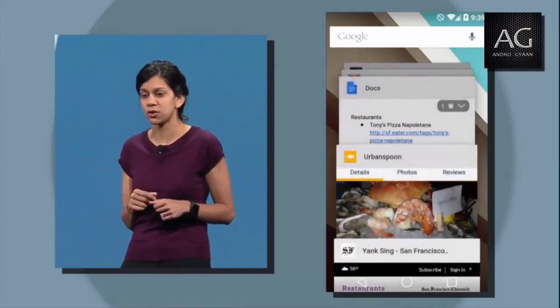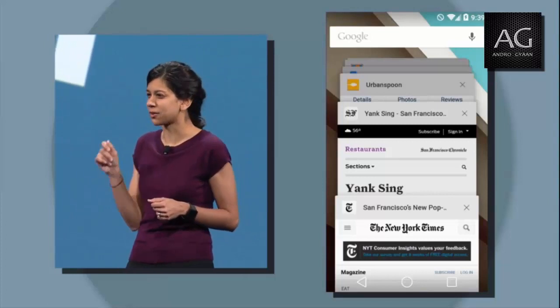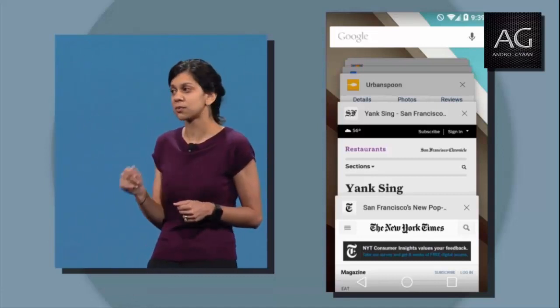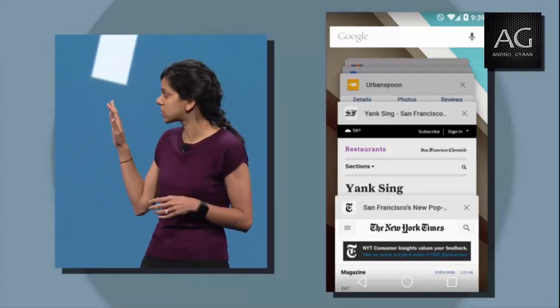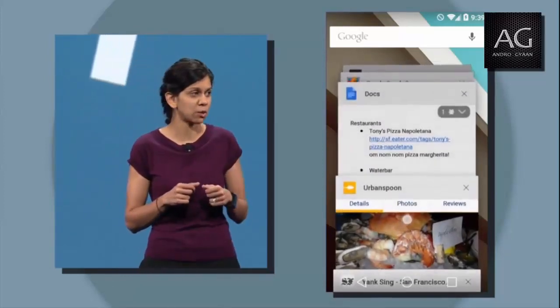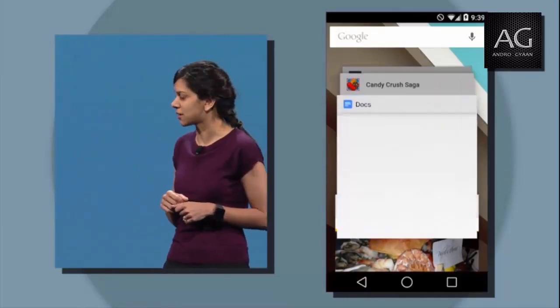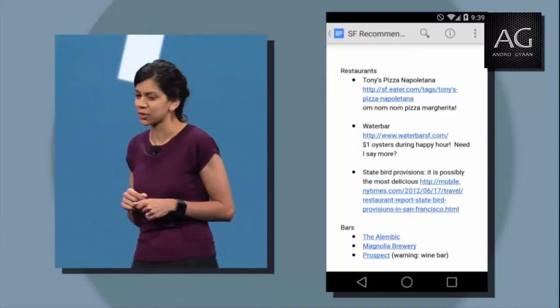As Tom scrolls through, the first thing you'll notice is Recents has also been grounded in material design — the overlapping cards have been rendered with realistic shadows and perspective. Tom's Chrome tabs are also listed here as well. He's been researching restaurants to go in SF, so he has articles from the New York Times and the SF Chronicle. As he scrolls back further, you'll notice he's been researching in the Urban Spoon app and has Docs open where he's been collaborating with some friends. Let's go ahead and click on that doc. I've heard great things about StateBird Provisions — let's check out that article.